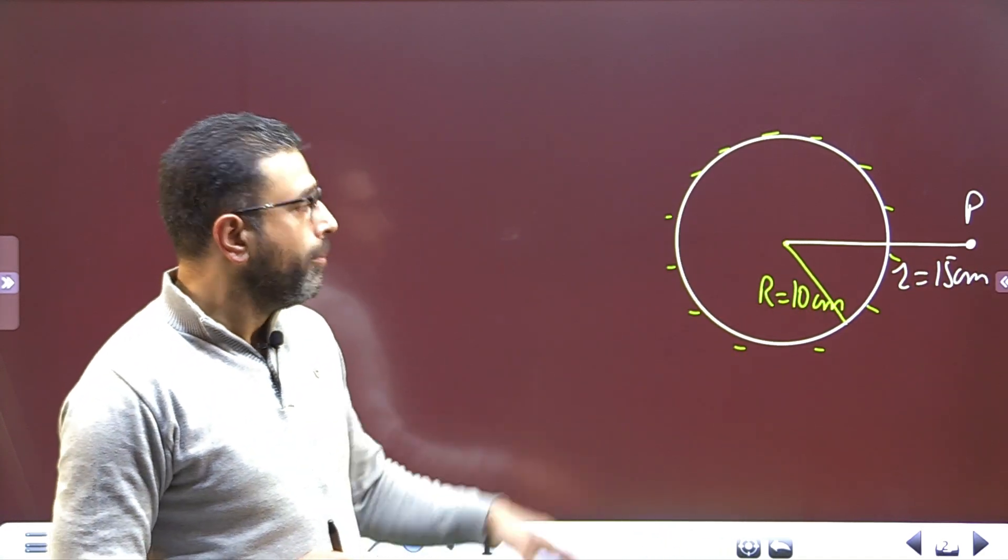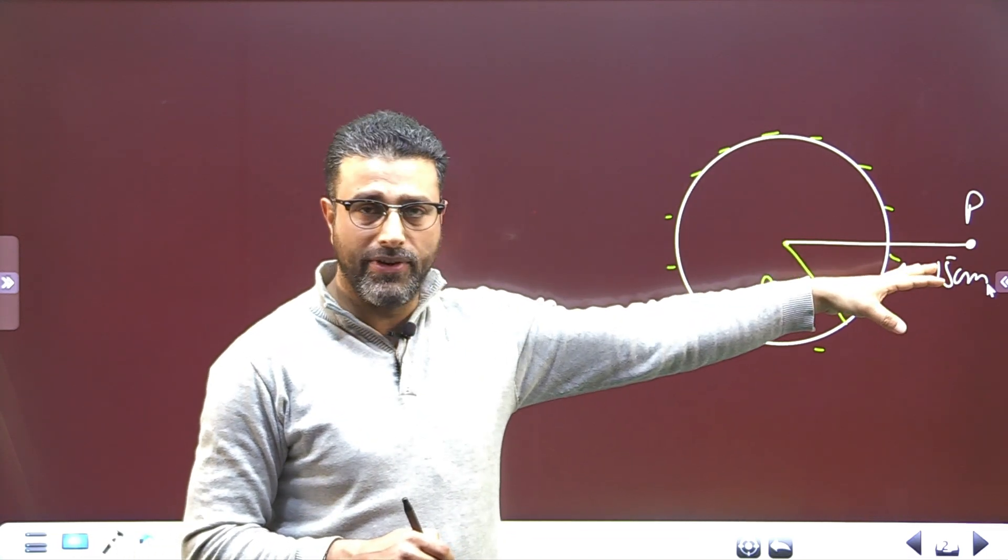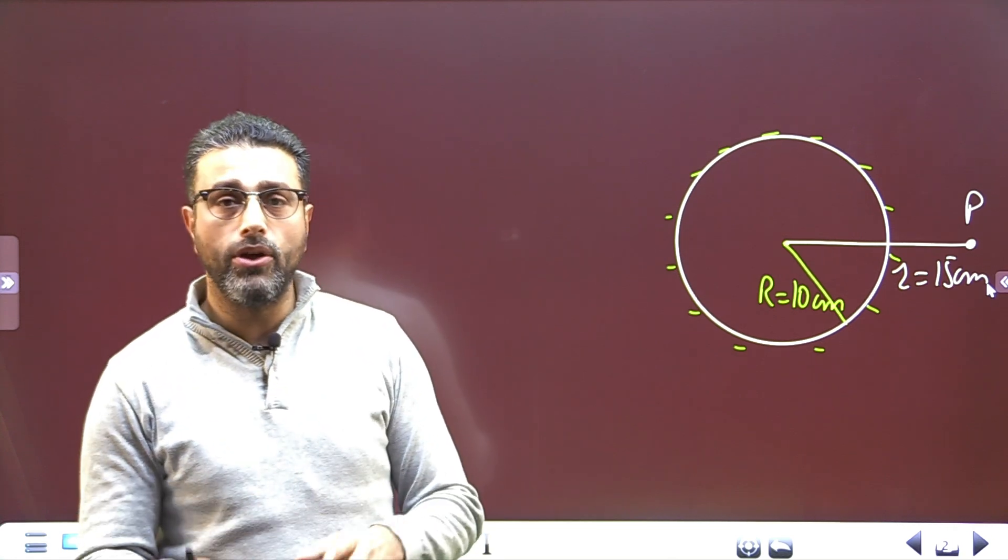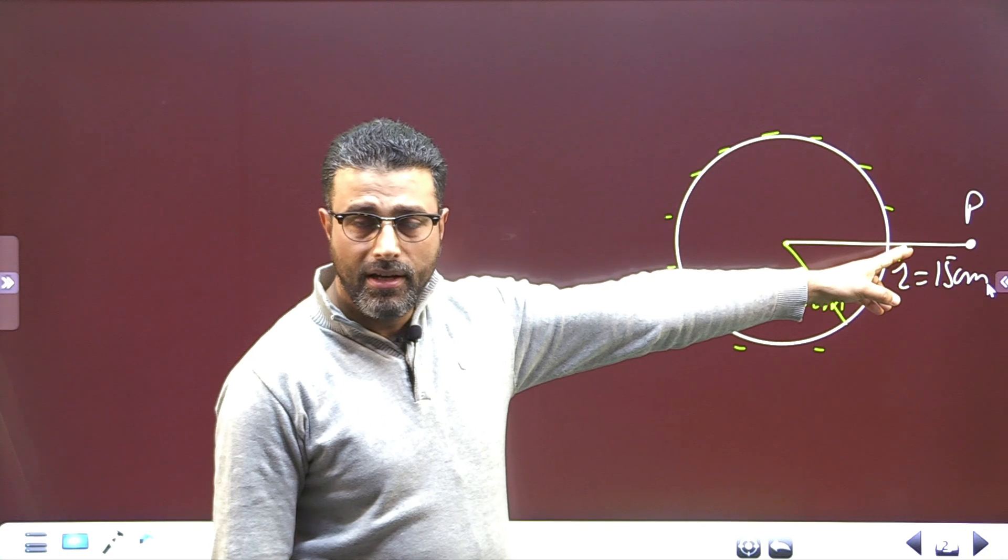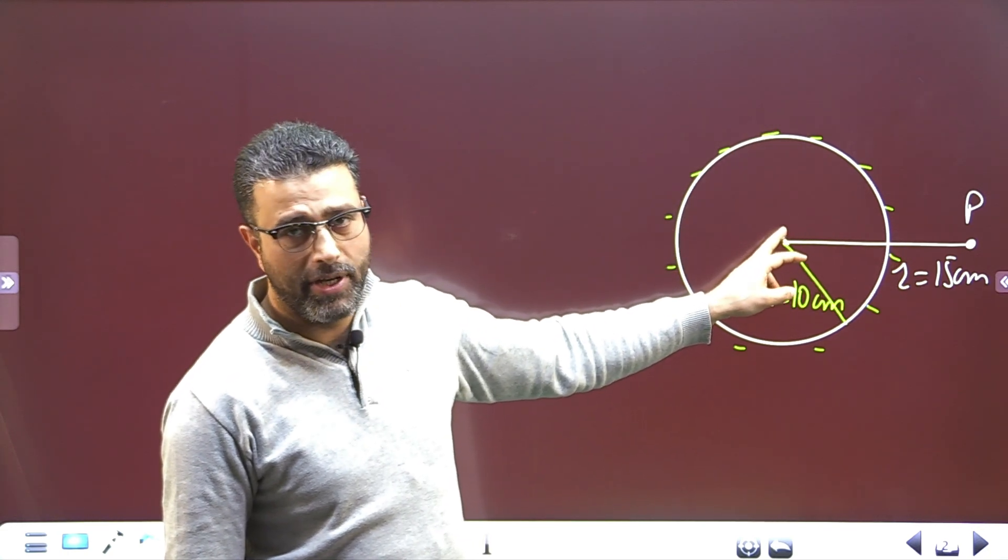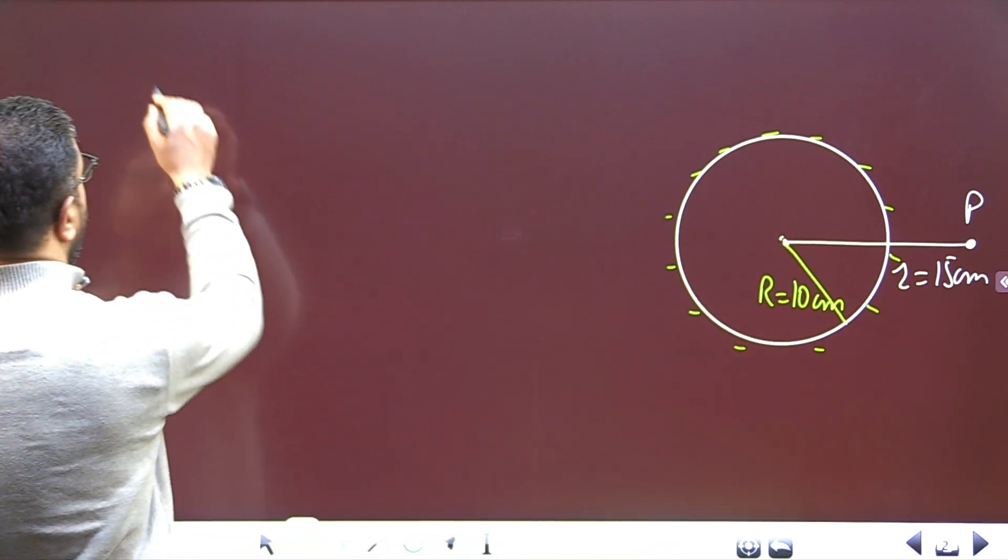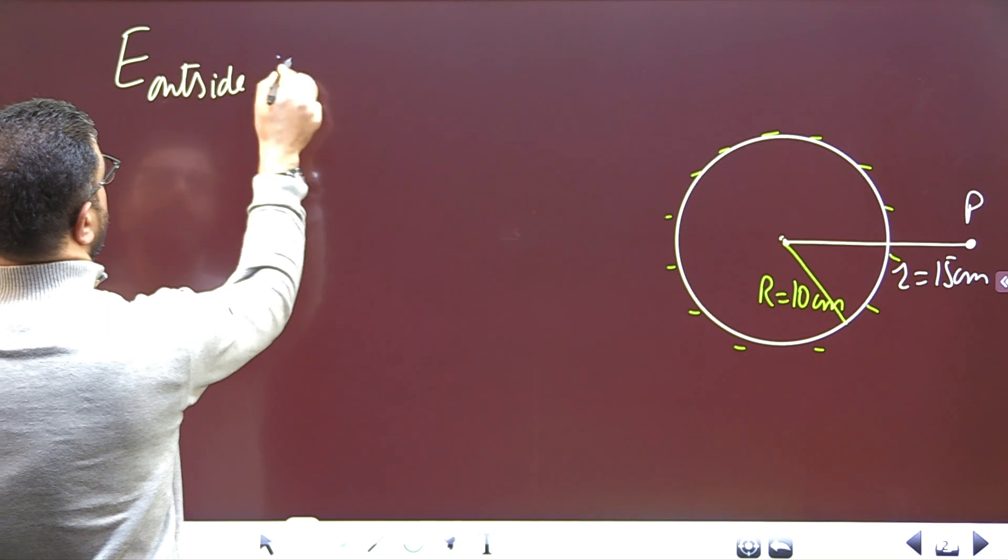That is greater than 10 centimeters, which is the radius of this sphere, meaning that point P is lying outside this sphere. From problem 45 we already know that for points lying outside the sphere, it behaves like a point charge located at its center.